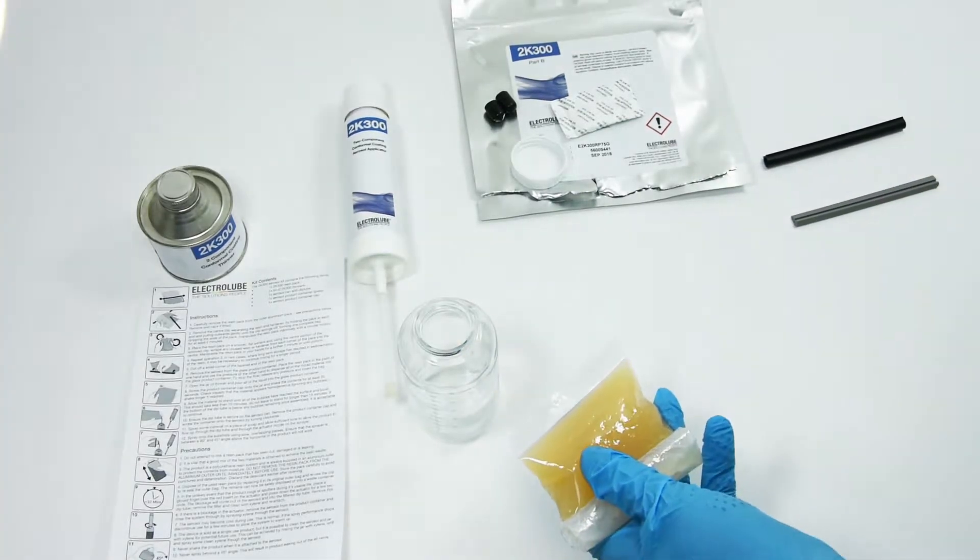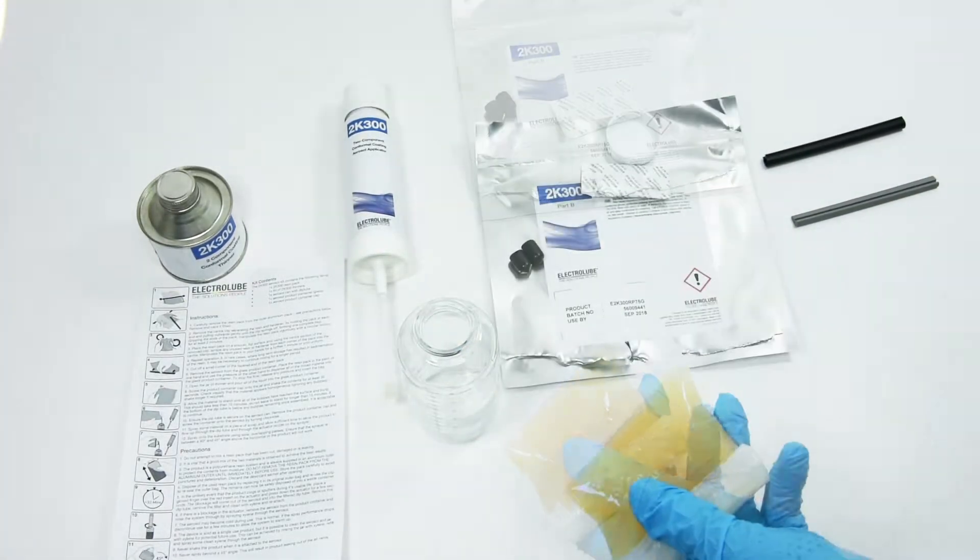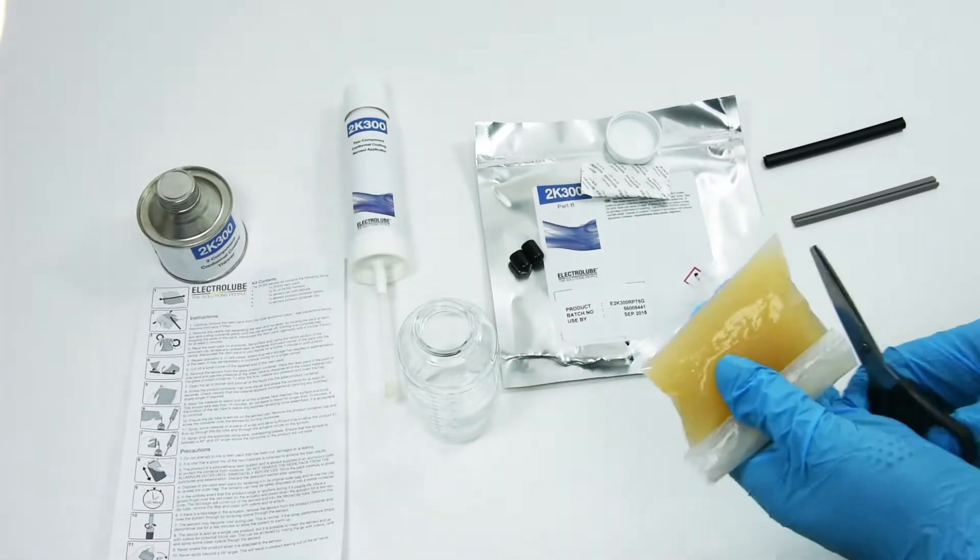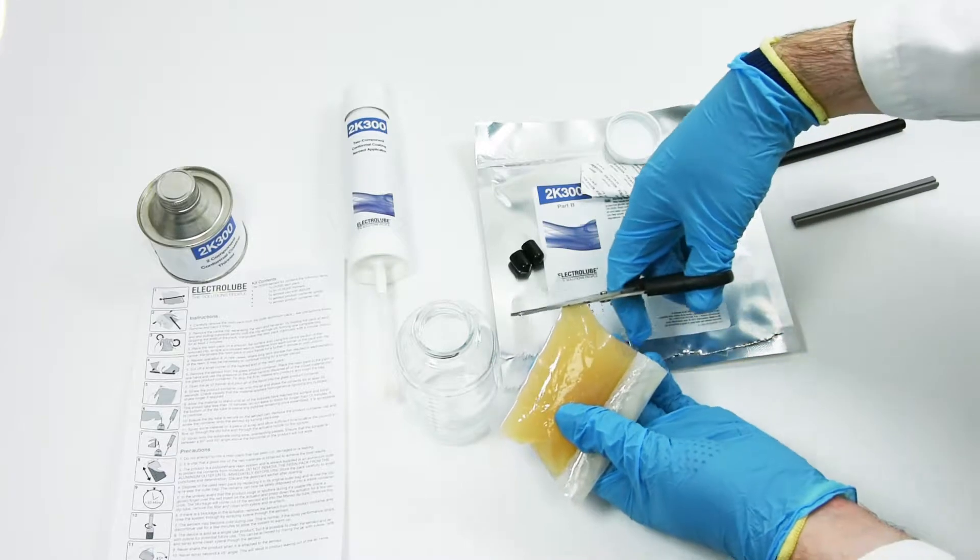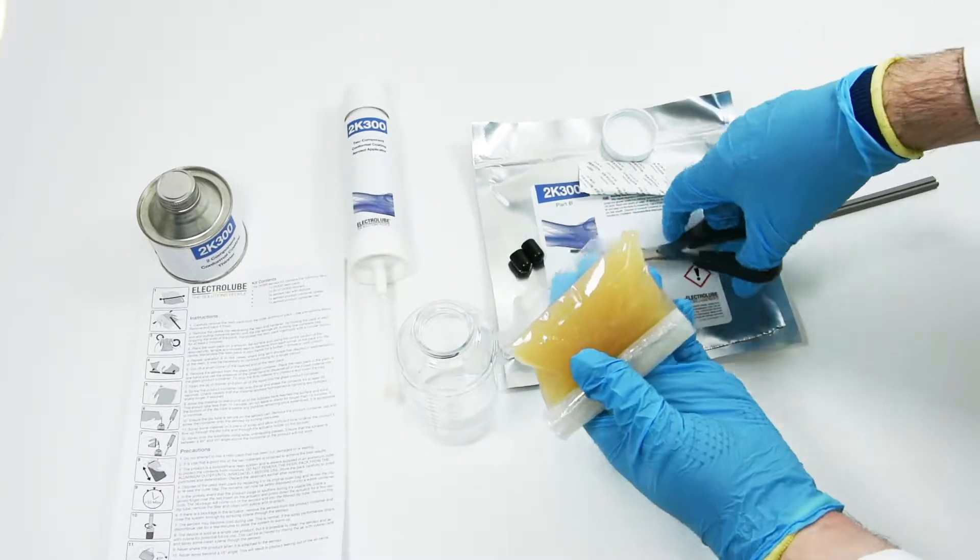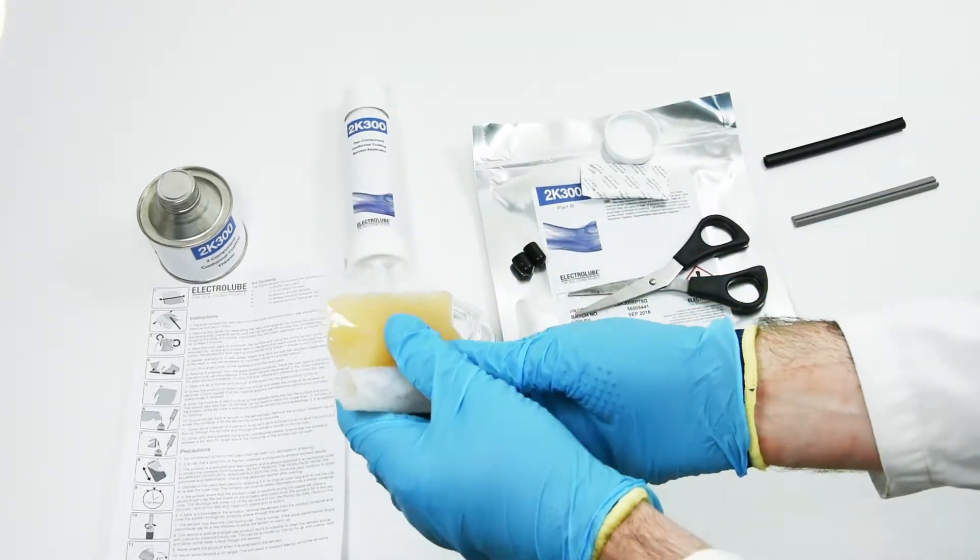Place the resin pack in the palm of one hand, cut off a small corner of the tapered end of the resin pack, and use the pressure of the other hand to dispense all of the mixed material into the glass product container.